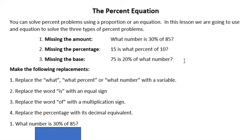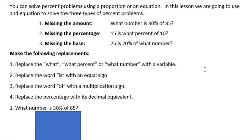You're going to make replacements from your original statement into mathematical symbols, and you're going to replace the what or the what percent or what number with a variable. When I do it, I use the variable that makes sense by what's missing. So if the amount is missing, I use A, the percent I use P, the base I use B, but it doesn't matter what variable you use. You could always use X or N or whatever you prefer.